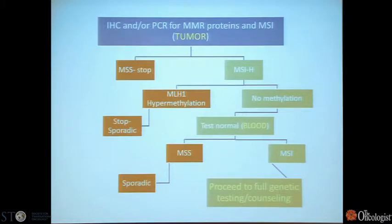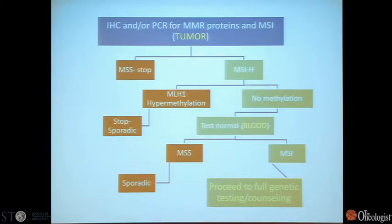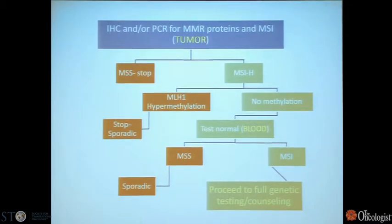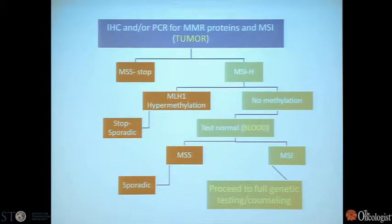In terms of genetic counseling, this is an algorithm we go through in the clinic when we see a patient with colon cancer. We test for microsatellite instability — either DNA-based or immunohistochemistry, and at least one should be done. If it appears MSI high, you look at methylation status. If there is MLH1 hypermethylation, you can stop genetic counseling because this is a sporadic tumor, not Lynch syndrome. If there's no methylation, you test a normal tissue such as blood. If you find microsatellite instability in normal tissue, you test other family members because you've identified someone with germline microsatellite instability.